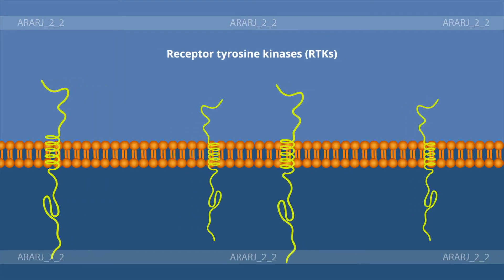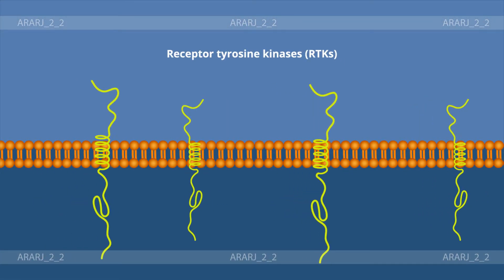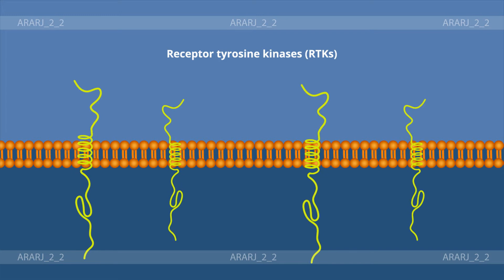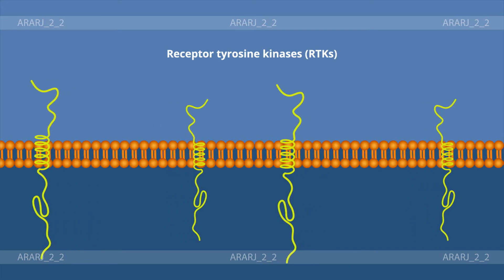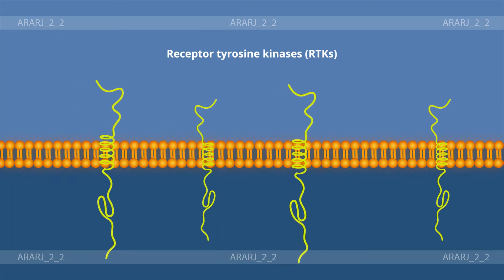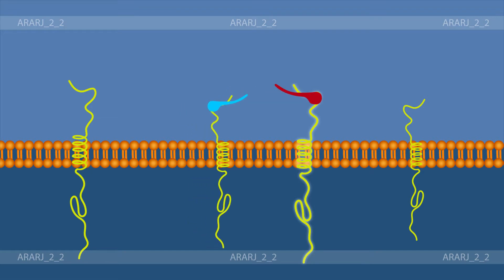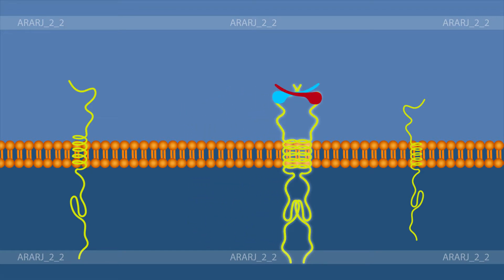Receptor tyrosine kinases, or RTKs, are a class of enzymes located at the cell surface. When activated by their ligand, RTKs phosphorylate specific target proteins within the cell called substrates.